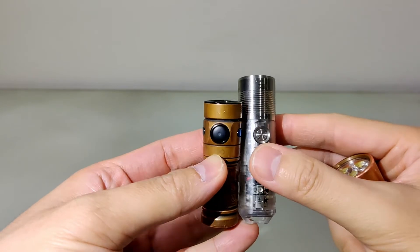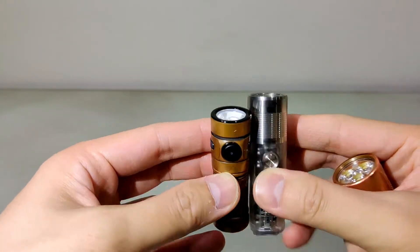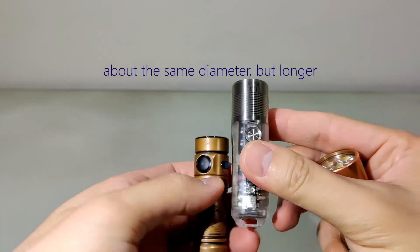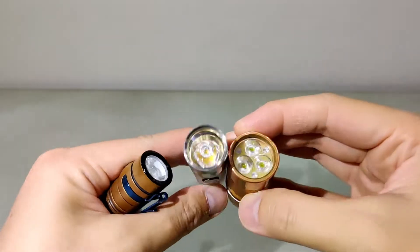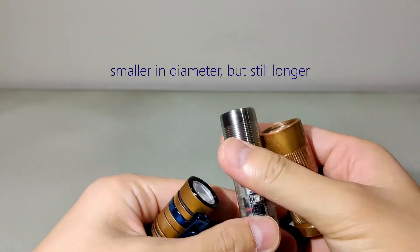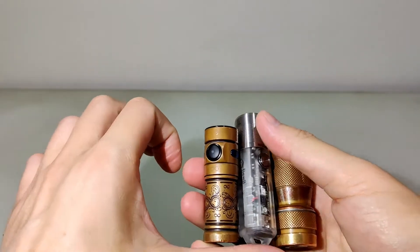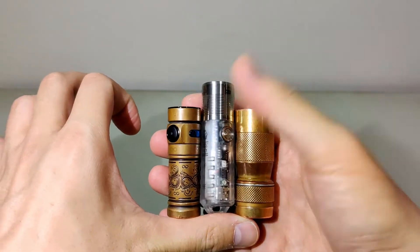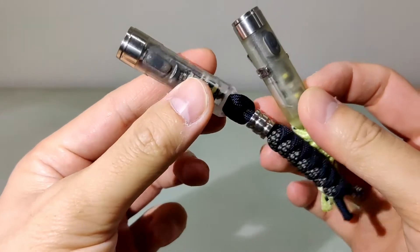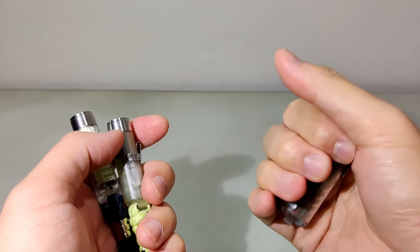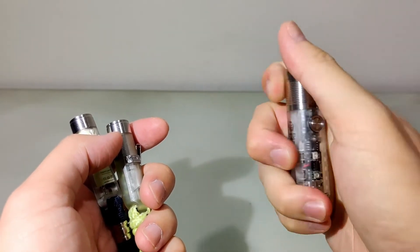This is also a bit bigger than I thought it would be. Versus a 16340 light and 18350 light. Maybe because I'm used to their tiny little ones. But actually this is a nice size to be handled comfortably.